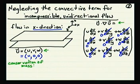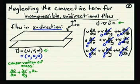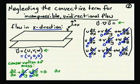In a Cartesian coordinate frame, this can be written as du/dx plus dv/dy plus dw/dz is equal to zero. We specified before that v and w were equal to zero.